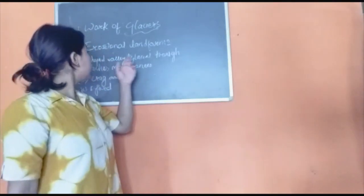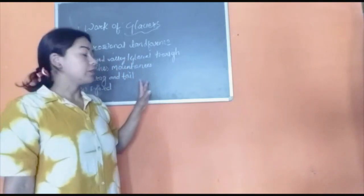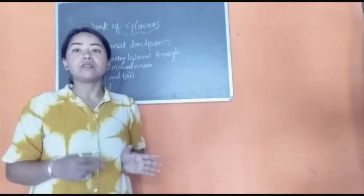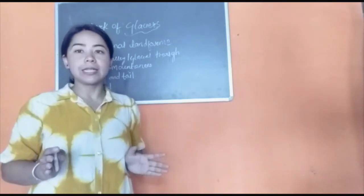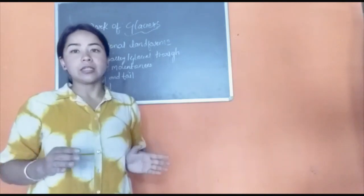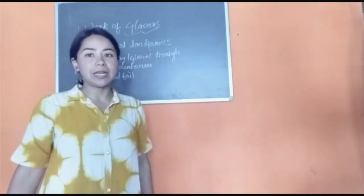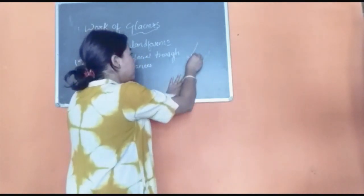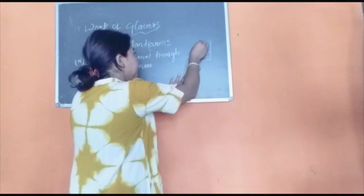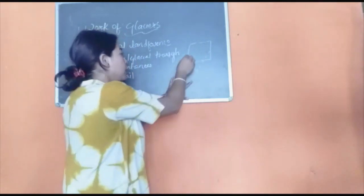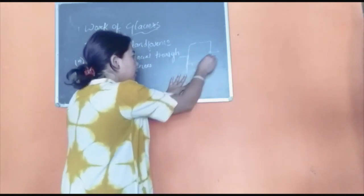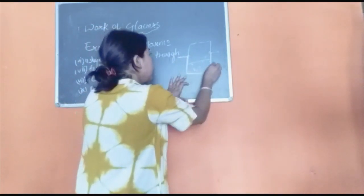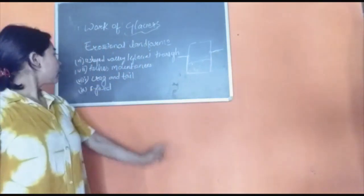Another feature is the glacial trough or U-shaped valley. When glaciers move on an already existing V-shaped valley, they do the work of down-cutting as well as side-cutting simultaneously because of their huge size. Because of this simultaneous down-cutting and side-cutting, a U-shaped valley is formed. Suppose this is a V-shaped valley already existing, on which a huge block of glacier moves — as it moves through the V-shaped valley doing side-cutting and down-cutting simultaneously, a U-shaped valley is created, also known as a glacial trough.